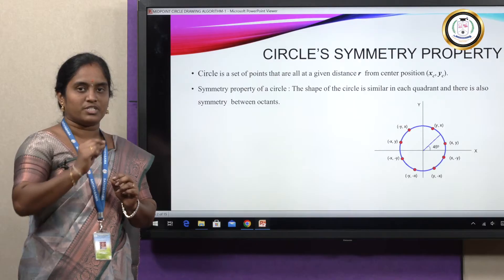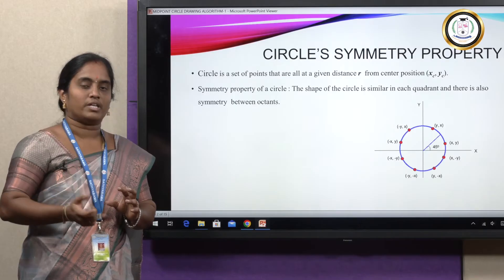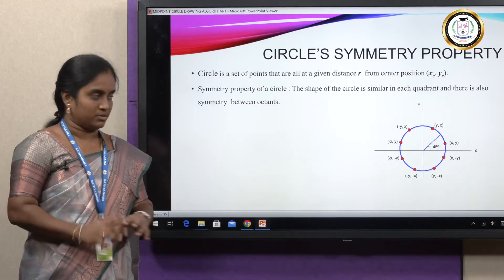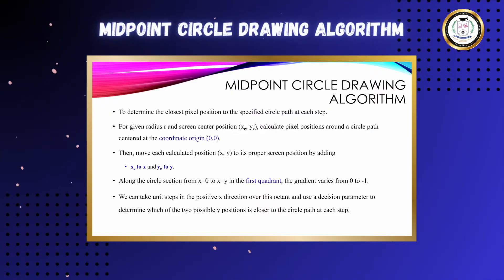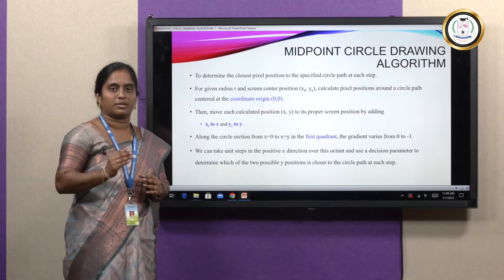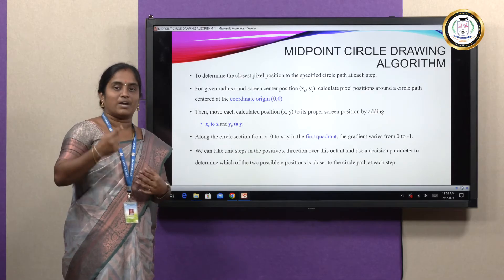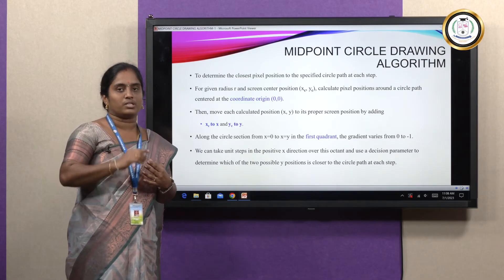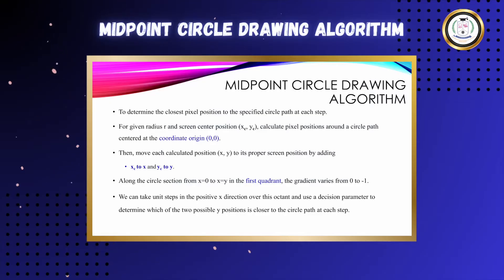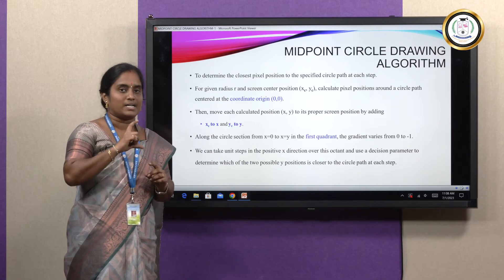Once one octant's circumference coordinates are drawn, we can draw the entire circle using the symmetry property. The midpoint circle drawing algorithm works by first determining the closest pixel point. We start at center (0, 0) with given radius r, beginning at initial point (0, r), and stop the iteration when x is equal to y.